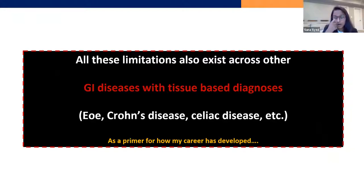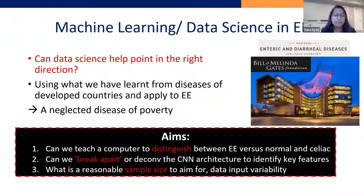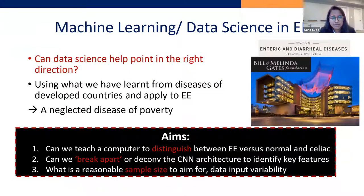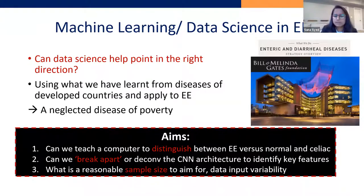This really speaks to why we can use computational methods that do pattern recognition across images in multiple diseases, even though the work started in environmental enteropathy. At a Gates Foundation meeting, the question was: while we're using different approaches to study tissue to come up with a gold standard diagnosis for EE, can data science and machine learning help point in the right direction? Specifically, can you teach a computer to distinguish between tissue from children with environmental enteropathy versus normal and US-controlled celiac? Can we make sense of this decision making, and what's a reasonable sample size to aim for?